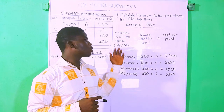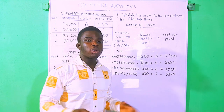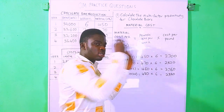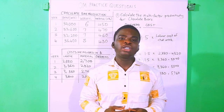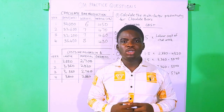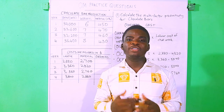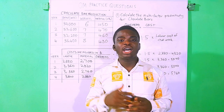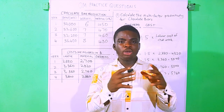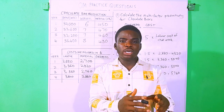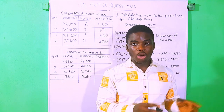These are the values for material cost, so all we have to do now is put them into our table. Moving on, we compute our overhead cost. From the question, overhead cost was given as 1.5 times the labor cost of that particular week. So for example, if you were to compute the overhead cost for week one, that would be 1.5 times the labor cost of week one.